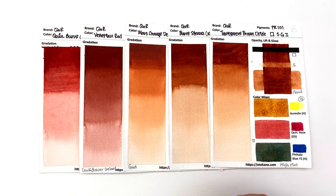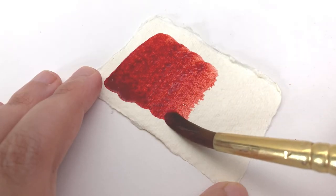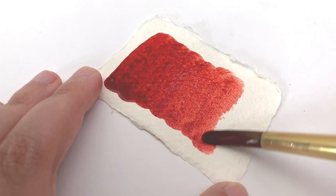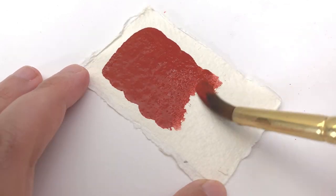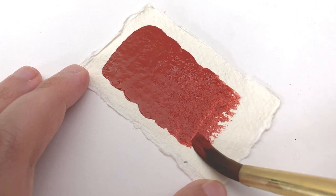So in this episode we have Queen Burnt Orange made with PR206 and Venetian Red made with PR101.